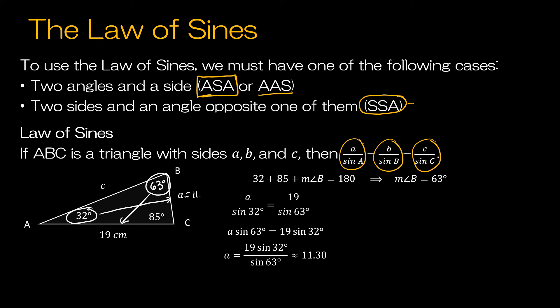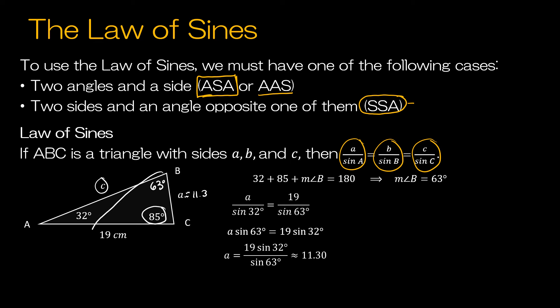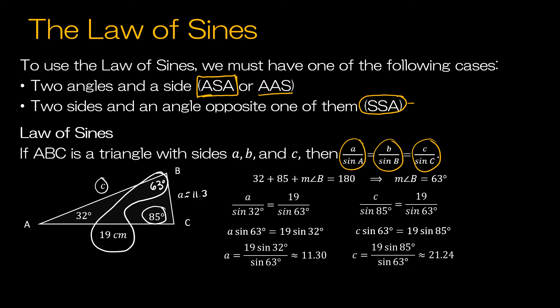So I have about 11.3. Now when I do my work to find the other missing side — I now have to find C using 85 degrees — but don't use 32 degrees and 11.3 as my known, because 11.3 was rounded. We want to use exact values if possible. So I'm still going to use 63 and 19 as my known ratio: 19 divided by sine of 63. And then C divided by sine of 85. The math is exactly the same, and I end up with about 21.24. So I was able to solve that triangle.